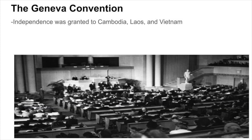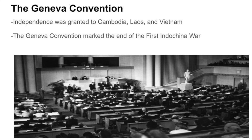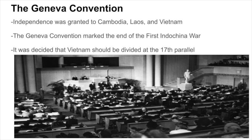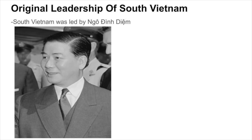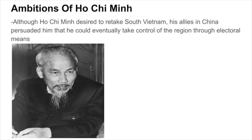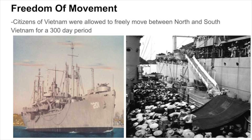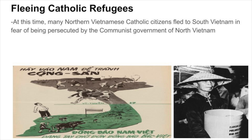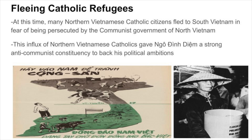At the Geneva Convention, independence was granted to Cambodia, Laos, and Vietnam, marking the end of the First Indochina War. It was also decided that Vietnam should be divided at the 17th parallel. South Vietnam was led by Goh Dinh Diem, while North Vietnam was led by Ho Chi Minh. Although Ho Chi Minh desired to retake South Vietnam, his allies in China persuaded him that he could eventually take control through electoral means. Many Northern Vietnamese Catholic citizens fled to South Vietnam in fear of persecution, giving Diem a strong anti-communist constituency to back his political ambitions.